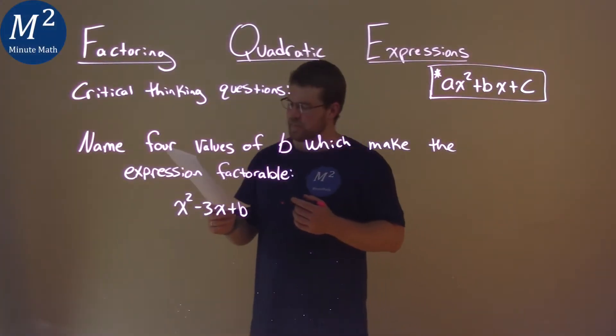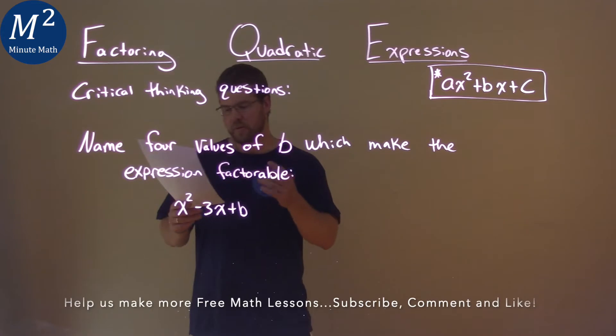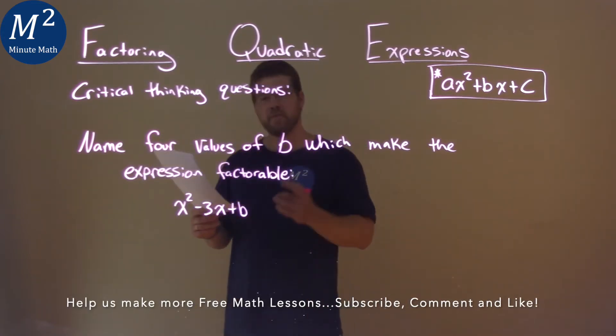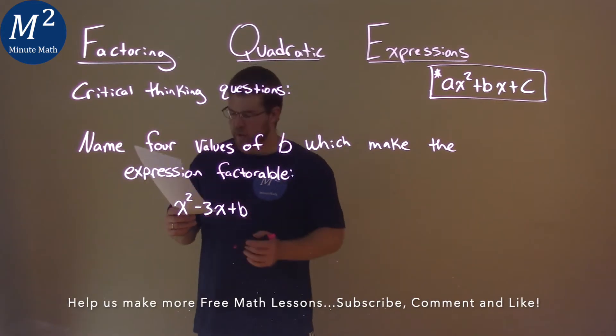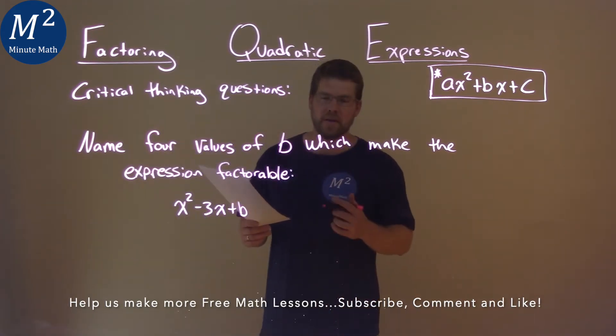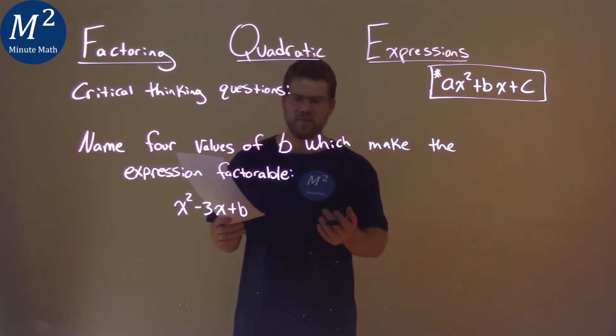We're given this problem: Name four values of b which make the expression factorable. x² - 3x + b. Tricky here, b is really our c value.